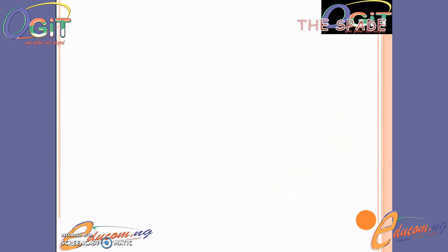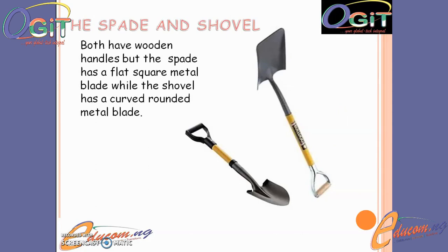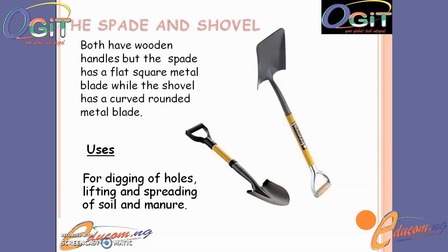The next in line is the spade and shovel. As shown in the diagram, both the spade and shovel have wooden handles, but the spade has a flat square metal blade while the shovel has a curved rounded metal blade. Their uses include digging of holes and lifting and spreading of soil and manure on the farm.